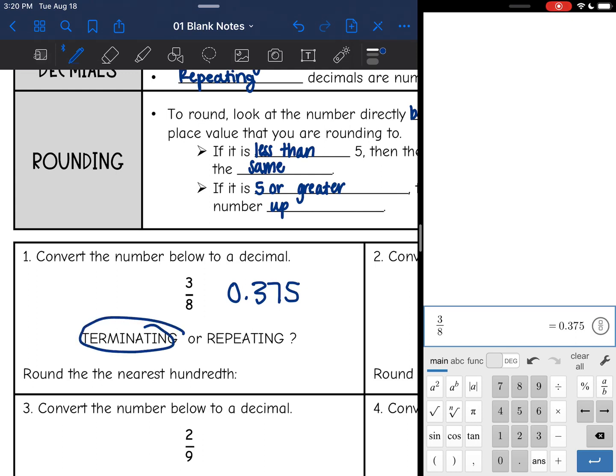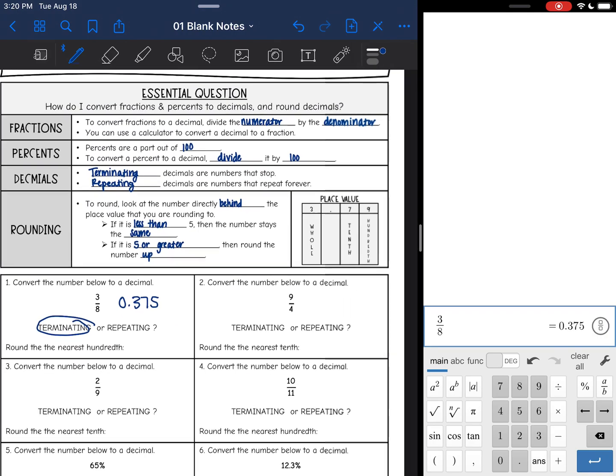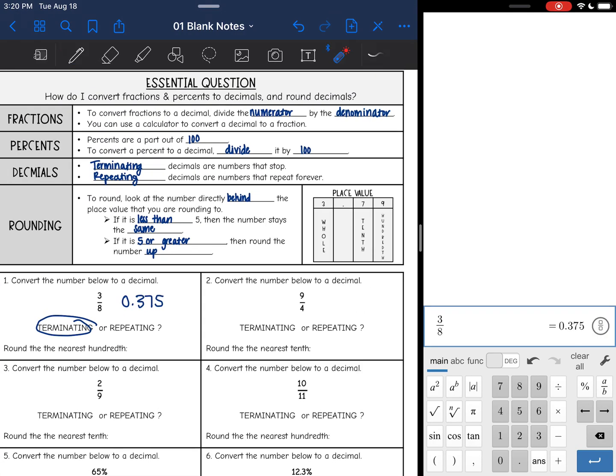Okay, now let's talk about rounding it. So let's review rounding up here. So to round, remember you're going to look at the number directly behind the place value that you're rounding to. So if we were rounding to the tenths, we would look at this number to see what to round that 7 to. And if we were rounding to the hundredths, then we would look at the third number to see what to round this to.